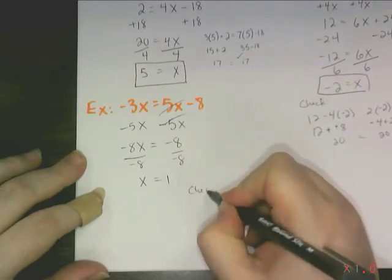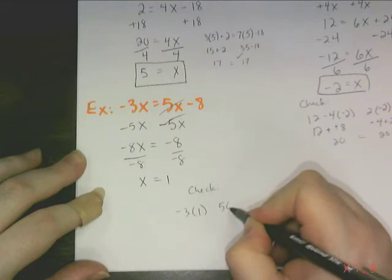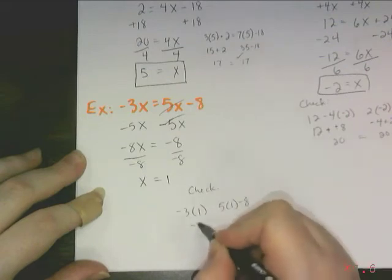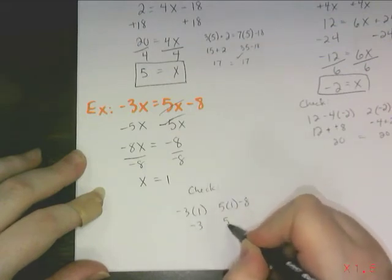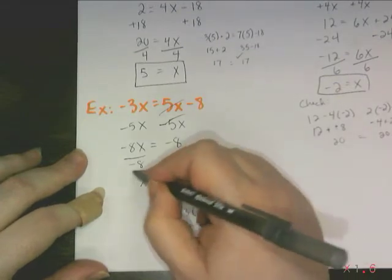And I can check that. Does negative 3 times 1 equal 5 times 1 minus 8? Well, this side equals negative 3. 5 minus 8 also equals negative 3. That equals out. My answer is correct.